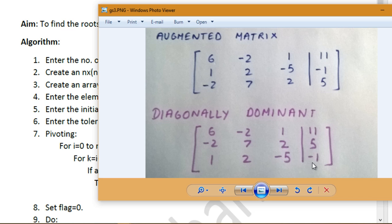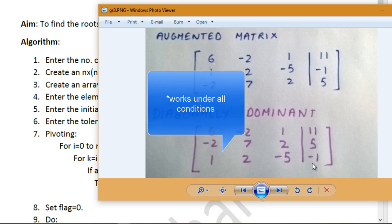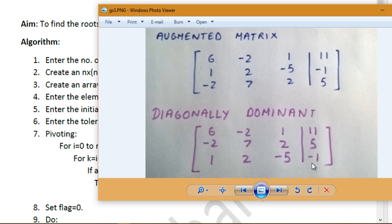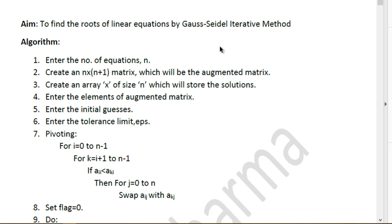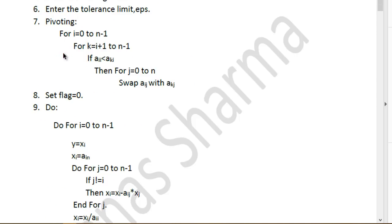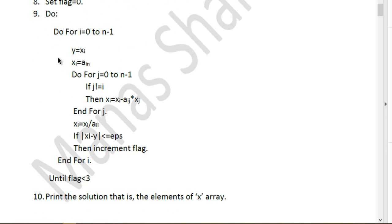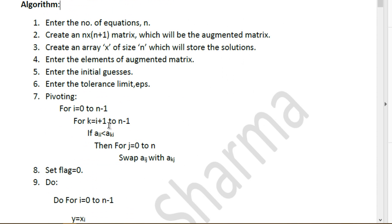The method could work sometimes even when the matrix is not diagonally dominant, but to create a robust program, it's better to include code that makes the augmented matrix diagonally dominant regardless of what the user enters. I've covered what the Gauss-Seidel method is and what we'll do in the program. Before jumping to the code, I'll go through the algorithm first, and I also have a flowchart prepared.